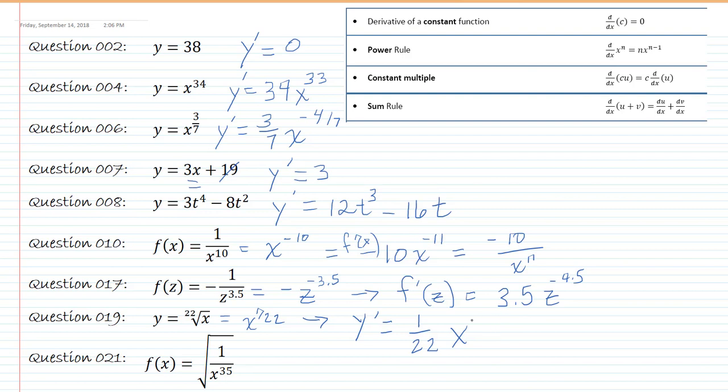So that would be negative 21 over 22. So again, that piece right there is 1 over 22 minus 1, and we're just calling 1 22 over 22 to get a common denominator.